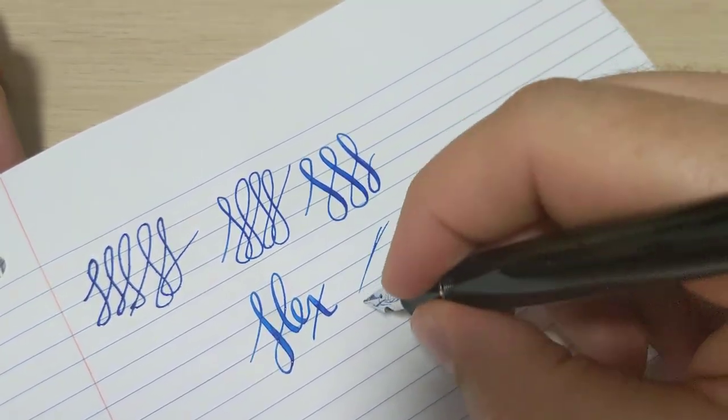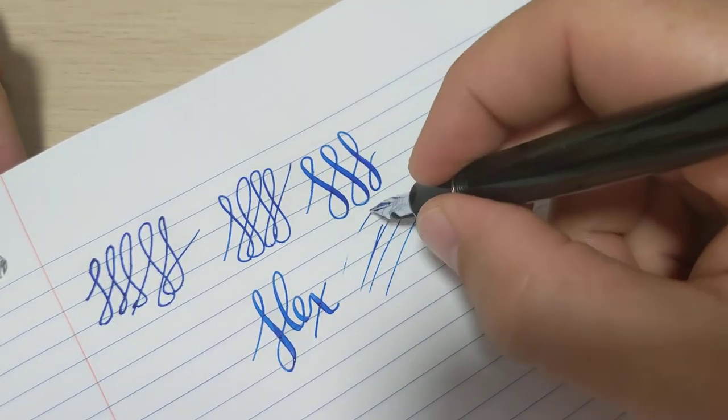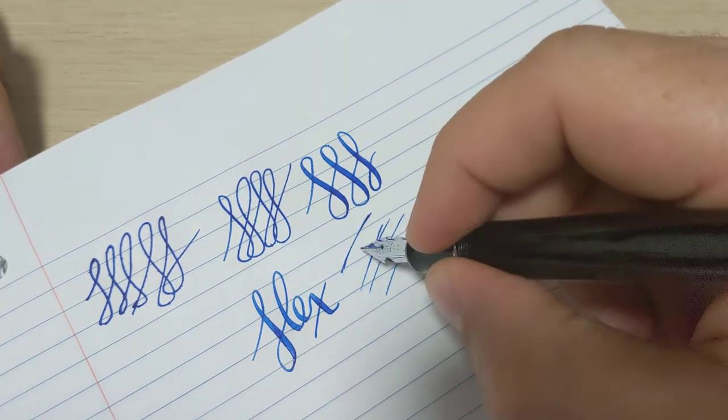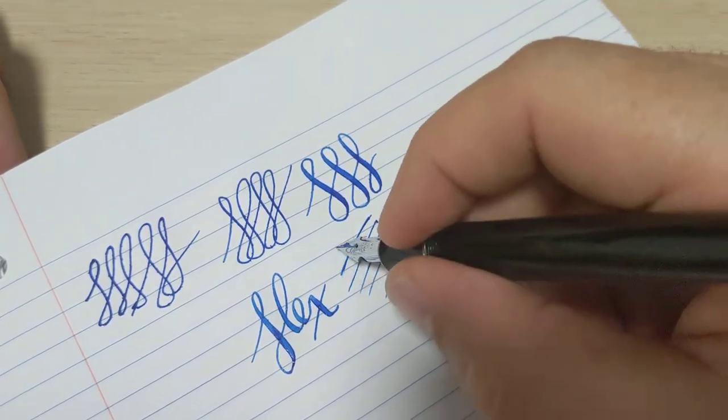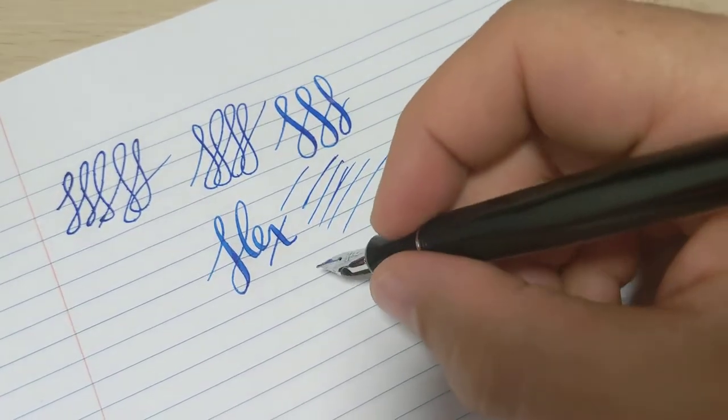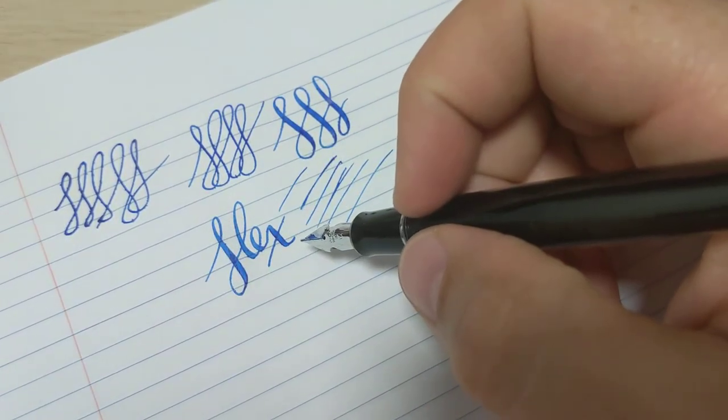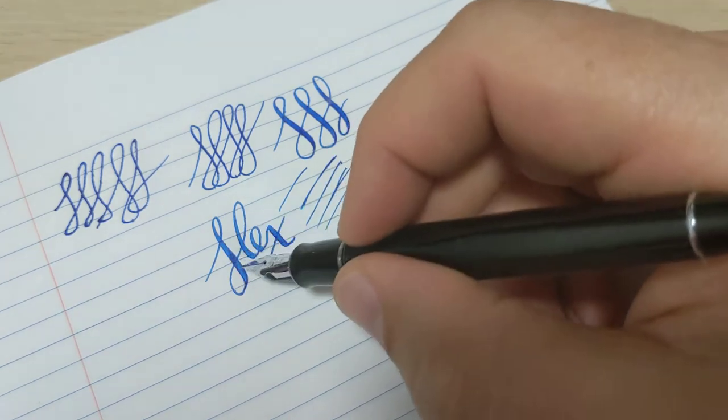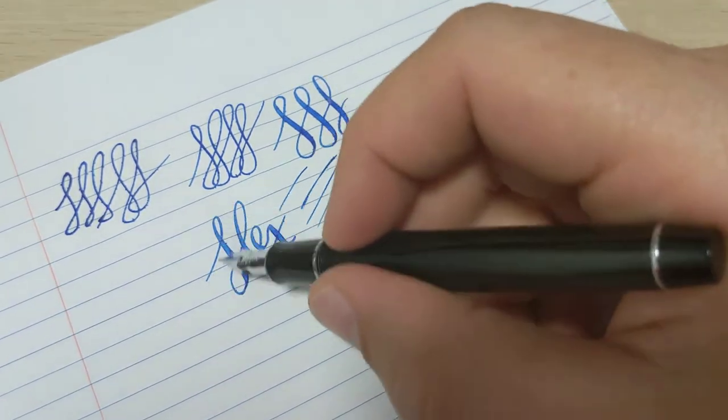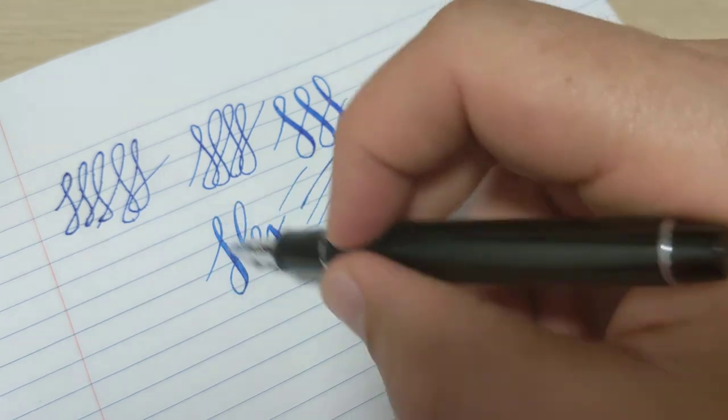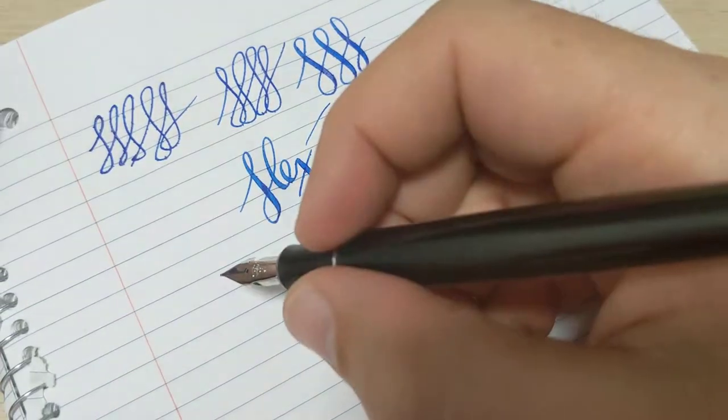I still wouldn't mind getting the Spenserian grind done on this one. That was me just lifting. I wish the thinnest part of the stroke was a little more thin, just to give that full flex effect. Because I'm happy with that line width. I wish this was just whisper thin as it goes through, just to really give that full flex appeal.